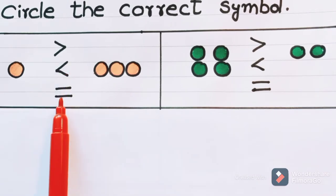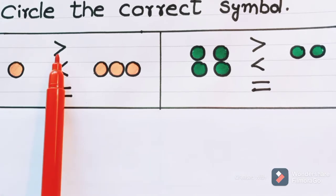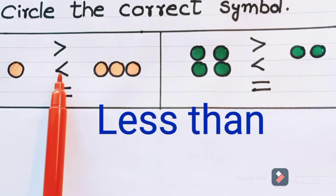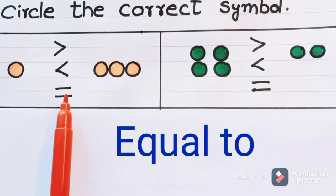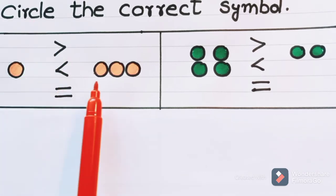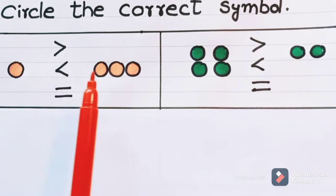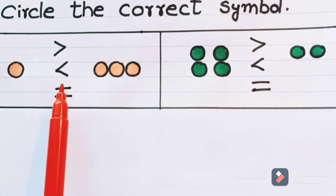Here we have three mathematical symbols. Children, do you know what are these symbols? This symbol is greater than. This one is less than. And this symbol is equal to. So we have to circle the correct symbol based on the number of objects. We have to count the number of objects on both sides of these symbols and based on the numbers we get, we have to circle the correct symbol.